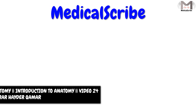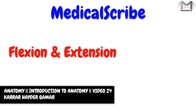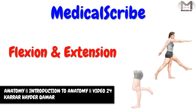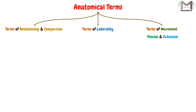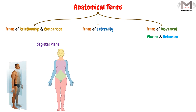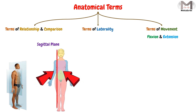Welcome back to Medical Subscribe. In this video we will talk about flexion and extension. These two terms describe types of movement, and they occur in the sagittal plane, which is the plane that divides the structure into right and left halves.